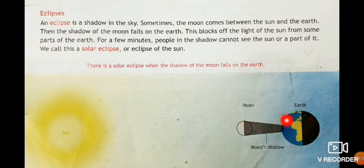You can see here the moon comes between the sun and the earth. Then the shadow of the moon falls on the earth.